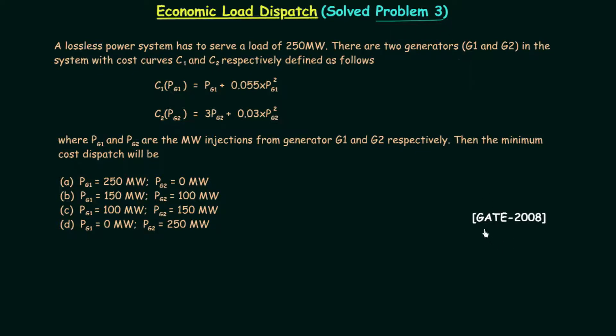The third problem is taken from GATE 2008 exam. In this problem, a lossless power system has to serve a load of 250 megawatts.